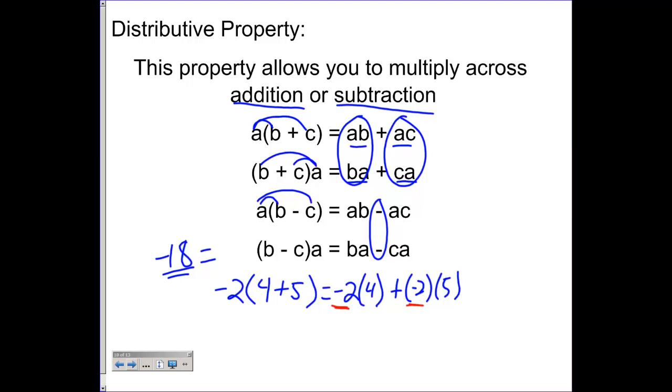If you don't bring the negative all the way through on your calculation, you will get the wrong answer. Then we end up with negative 8 plus negative 10, which is going to be a negative 18. And you can see we have the same answer here.